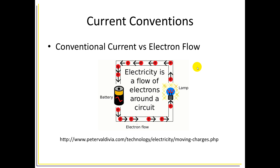Another convention we need to discuss is electron flow versus conventional current. In reality, a battery has a positive terminal at the top and a negative terminal at the bottom. Electrons are negatively charged, and they flow from negative to positive — through the circuit elements and back to the battery in a closed-loop path. But under conventional current, we represent current as flowing from positive to negative. So the convention used is actually the reverse of what's happening in reality. When reporting answers, you will typically report them in conventional current, flowing from areas of positive to areas of negative potential.